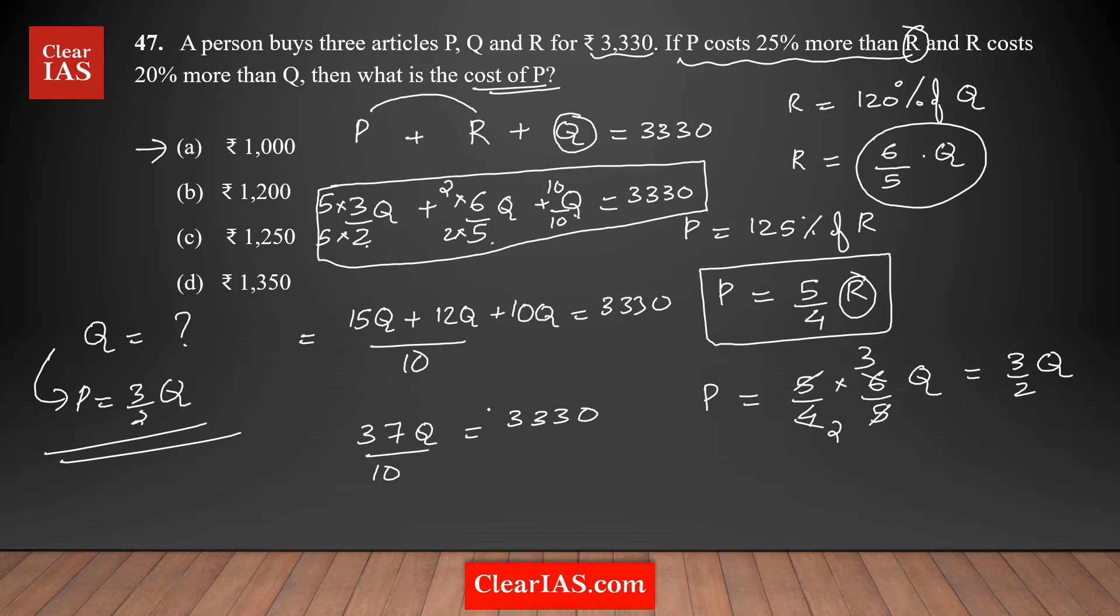You can see that 37 times 10 is 370. This is close to 370, so from 370 if you subtract 37, you get 333. So it's going to be 9 times, which is 90 here. The value of Q equals 90 times 10, which is 900.